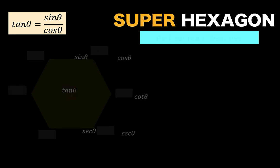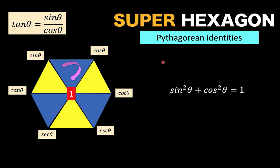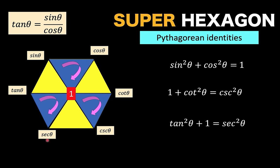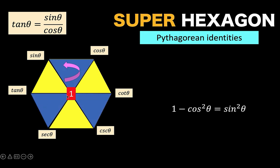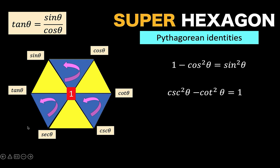But we are not yet done. Let's look at the Pythagorean identities by highlighting three triangles. Rotating clockwise from sine to cosine to one gives: sine²θ + cos²θ = 1. Similarly, rotating another set gives: 1 + cot²θ = csc²θ. And: tan²θ + 1 = sec²θ. Reversing to counterclockwise direction with subtraction gives: 1 − cos²θ = sin²θ, csc²θ − cot²θ = 1, and sec²θ − 1 = tan²θ.